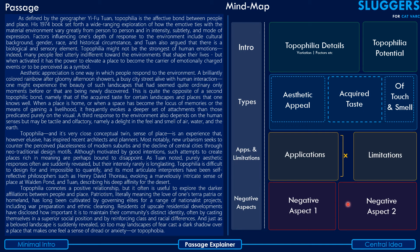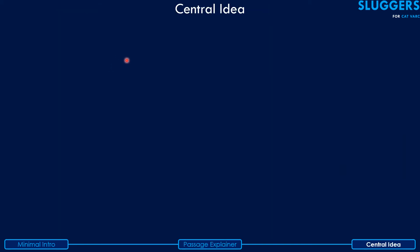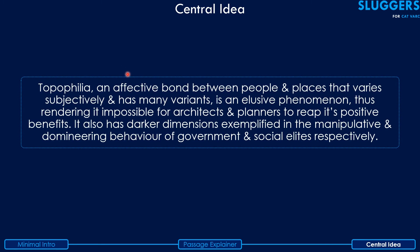The central idea of the passage: Topophilia, an affective bond between people and places, varies subjectively and has many variants, making it an elusive phenomenon that renders it impossible for architects and planners to fully harness its positive benefits. It also has darker dimensions exemplified in the manipulative behavior of government and social elites respectively.